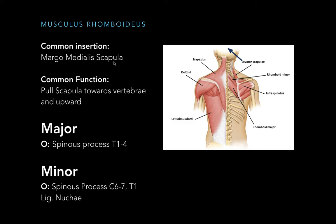On the next layer, the first muscle is musculus rhomboideus, which has a major part and a minor part. They have a common insertion point, which is margo medialis scapula, and a common function — pulling the scapula towards the vertebral column and upwards. Musculus rhomboideus major originates at the spinous process of T1 to T4, and the minor fuses with ligamentum nuchae and originates at the spinous process of cervical vertebrae C6 and C7, meeting the major at T1.